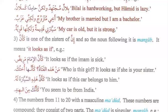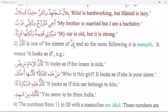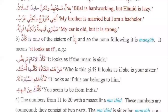Ka'anna is one of the sisters of inna, and so the noun following it is mansub. It means 'it looks as if.' For example: ka'anna al-imama maridun — it looks as if the imam is sick.